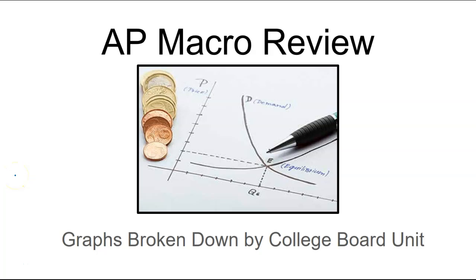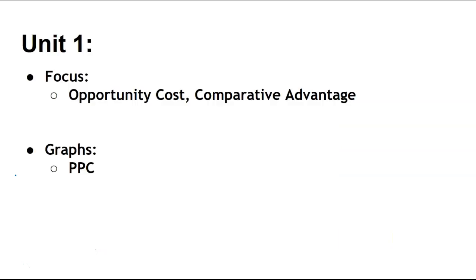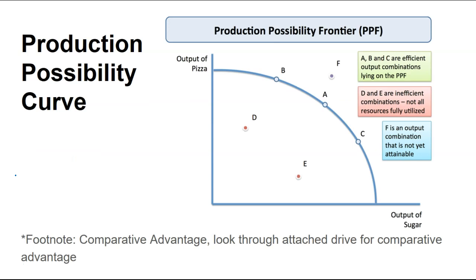Hey everybody, Mr. Farmer here, and today we're talking about AP macro graphs by College Board Unit. Let's get started with Unit 1. For Unit 1, the focus is opportunity cost and comparative advantage, and realistically there's only one graph, which is the production possibility curve or production possibility frontier.